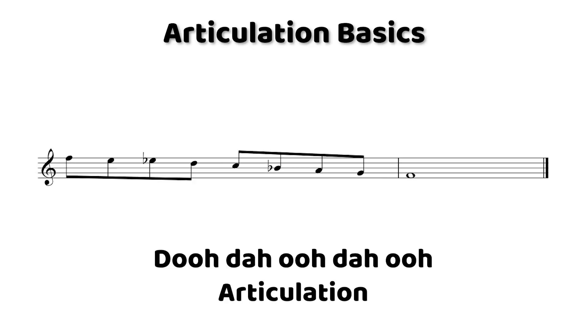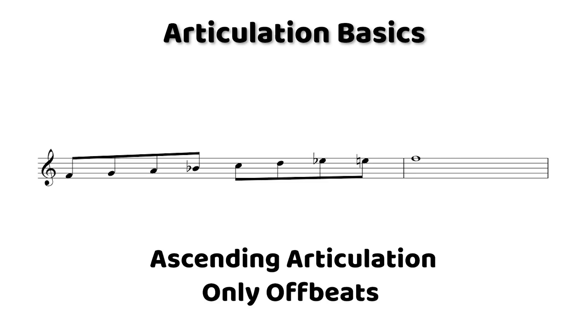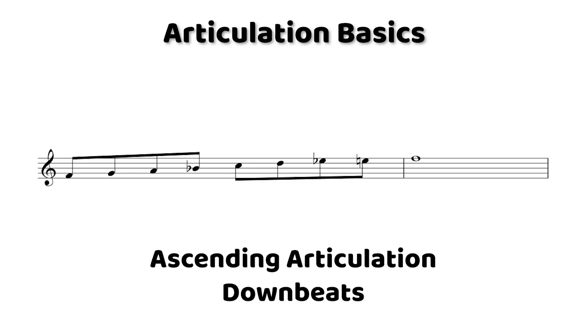That works great for going down, but what about going up? If we just do the off beats going up, that doesn't sound nearly as hip. So what if you accent the downbeats going up? That sounds a lot better — but how does that work? It wasn't just tonguing the downbeats. If I just articulated the downbeats and did nothing else, it would sound different. What I did was something more than that.